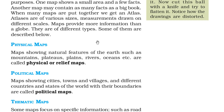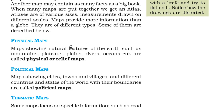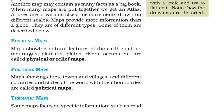Maps provide more information than a globe. There are different types of maps. The first type is physical maps. These are maps showing natural features of the earth like mountains, plateaus, plains, rivers, and oceans. These are called physical or relief maps.